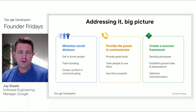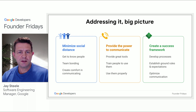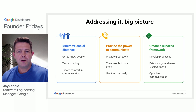There are a lot of challenges working with distributed technical teams. I'm going to walk you through eight best practices, all of which can be distributed into three major themes. The first one is minimizing social distance, then providing the power to communicate, and creating a success framework. All of these have foundations in communication.